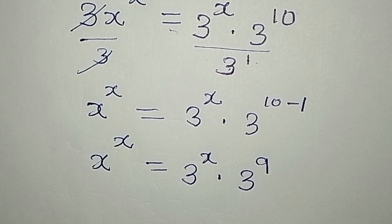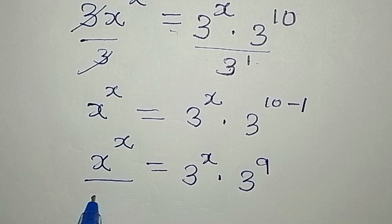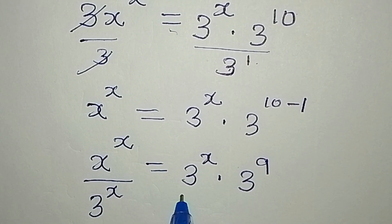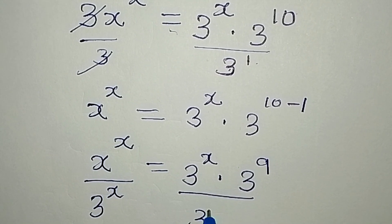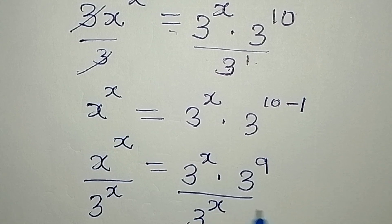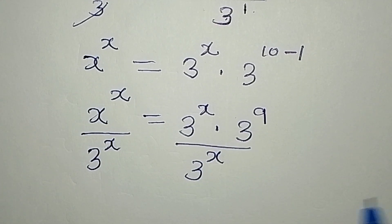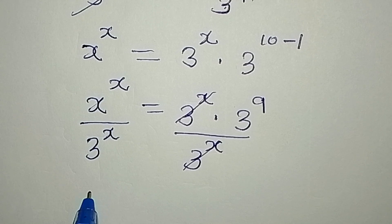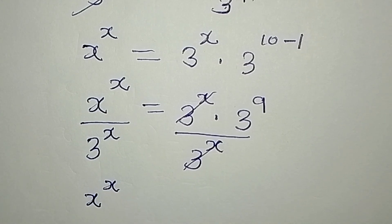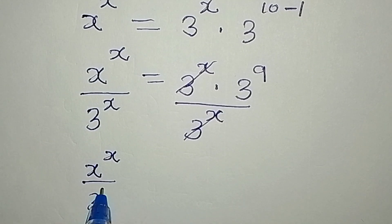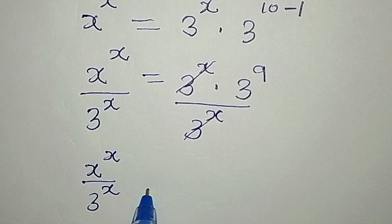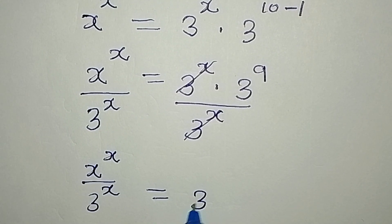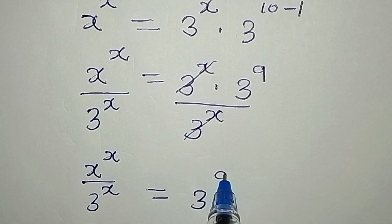From here, I'm going to divide both sides by 3 to the power of x. Dividing both sides by 3 to the power of x, the 3^x terms cancel, so we have x to the power of x over 3 to the power of x equal to 3 to the power of 9.